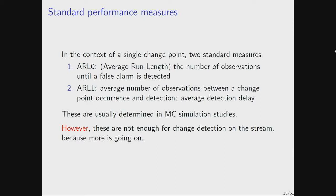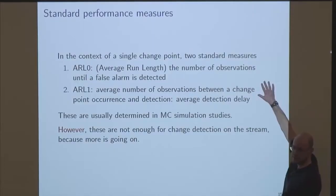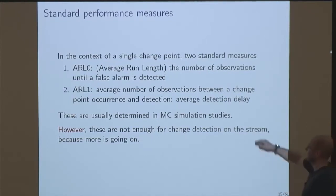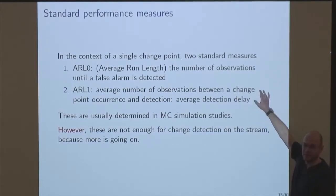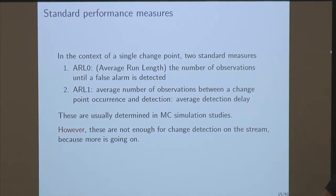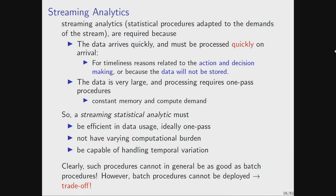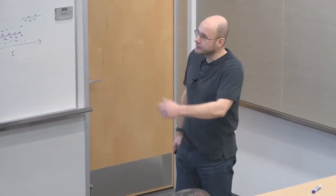There are two aspects of a single change point detector you can measure, analogous to the two errors from a hypothesis test: you either get a false alarm, or you measure how long it took to detect something. Both are important and they trade off against each other. On the stream, I need the detector to flag a change, that will get passed to another analytic, data keeps coming, I'll burn in again, learn about the data, then start detecting again.